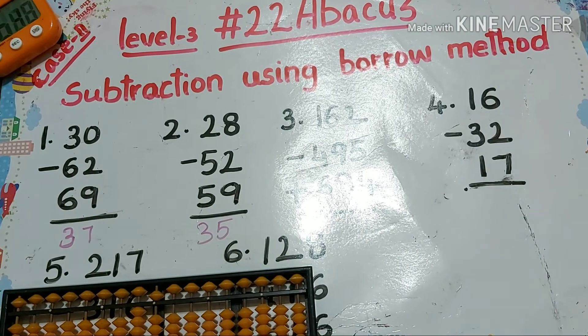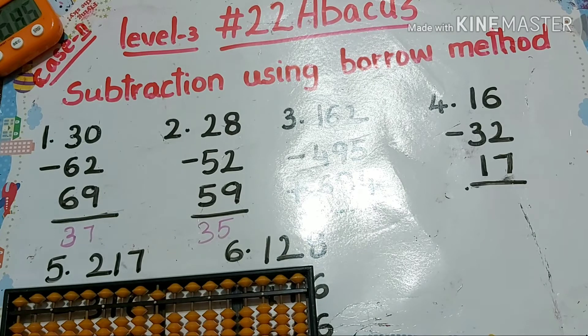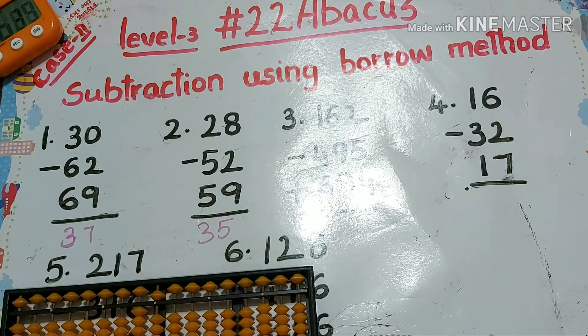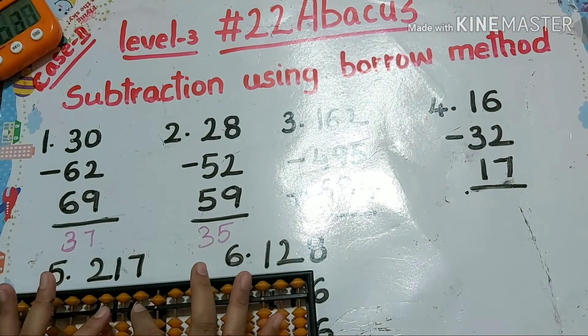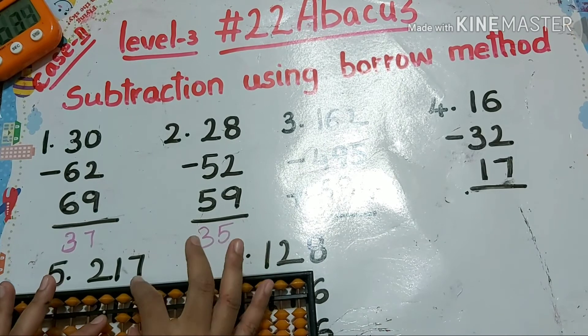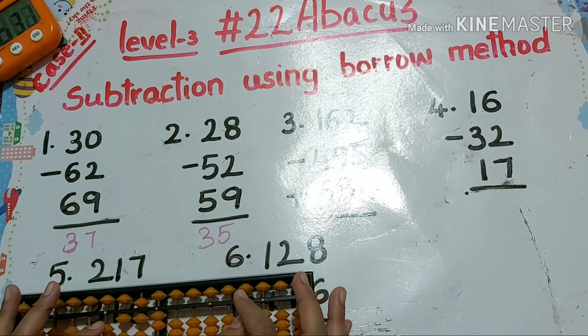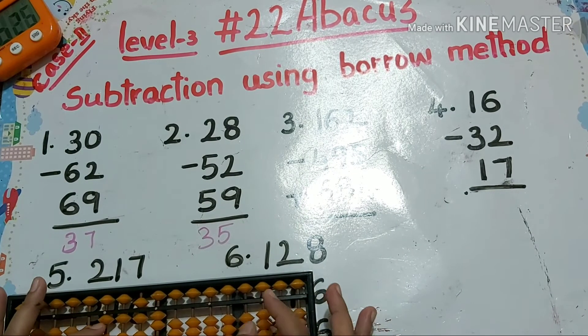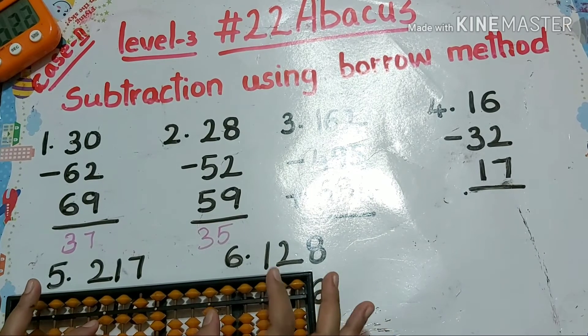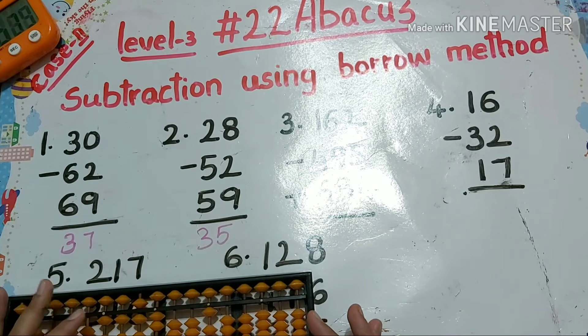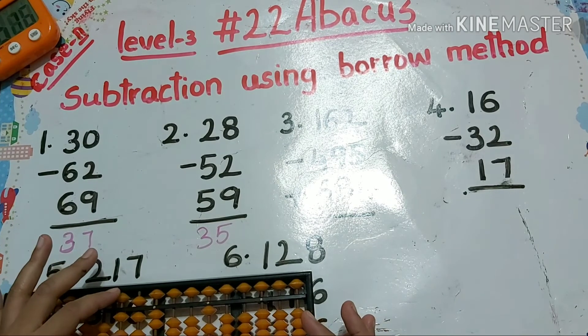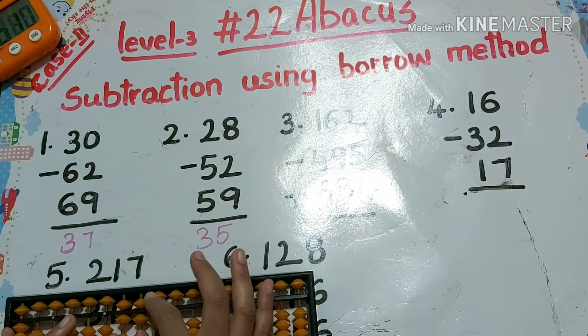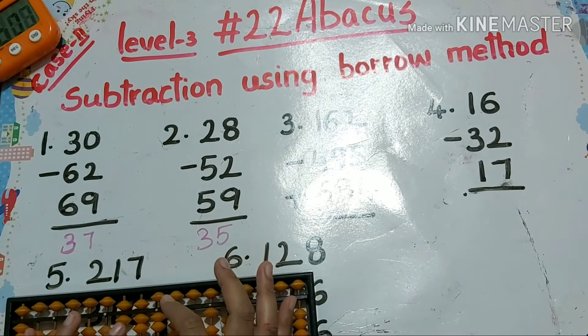Next one: 162 minus 495. So I'm taking one borrow. Minus four means minus ten plus six. Next time minus two: minus five plus ten minus five.